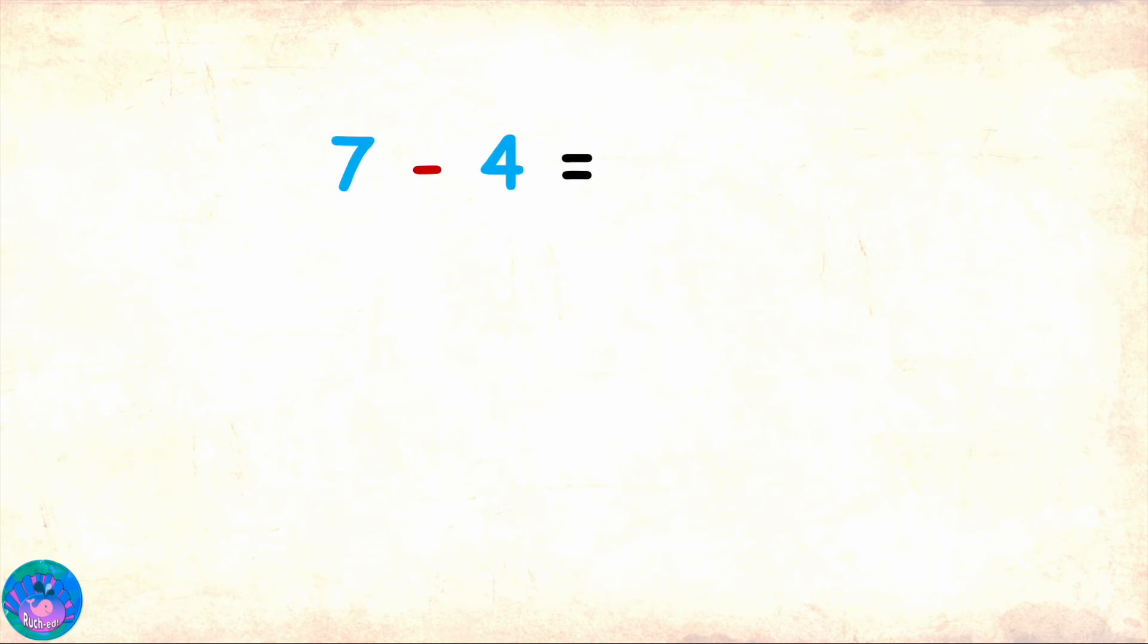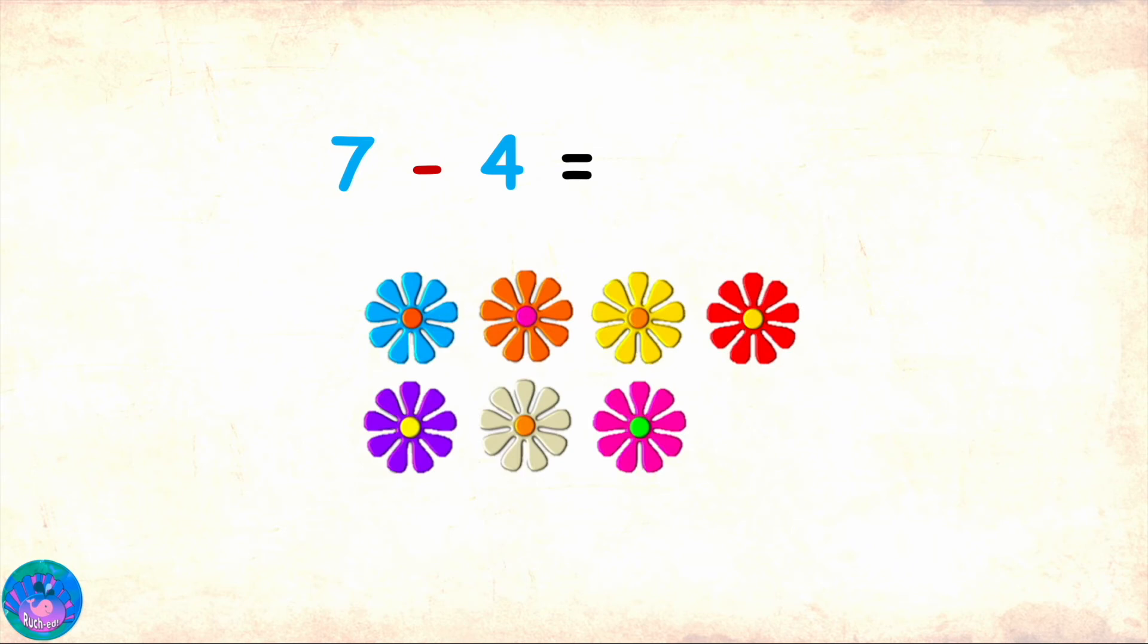Let's solve 7 minus 4. And this time, I am going to use flowers to represent the numbers. So, here are the 7 flowers. 1, 2, 3, 4, 5, 6, 7. And I have to subtract 4. So, I will cut 4 flowers. 1, 2, 3, 4. And we are left with 1, 2, 3 flowers. This means that 7 minus 4 equals 3.